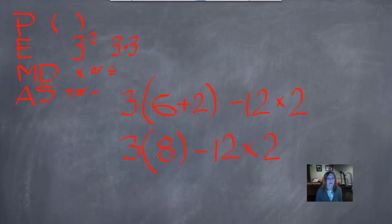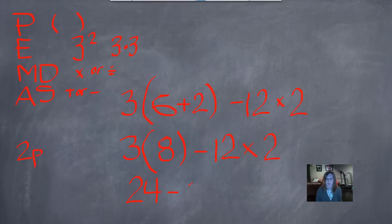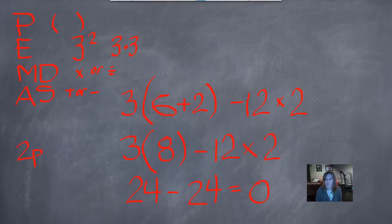The next step is exponents, but we don't have any. The next step is multiplication or division, whichever comes first. When you write a number right next to parentheses, it means to multiply — same as when you write a number next to a letter. So we multiply 3 times 8, which is 24. That's not the only multiplication in this problem, but we do it first because it comes first — just like we read left to right. The next multiplication is 12 times 2, which is 24. Now we've done all multiplication, so we do addition or subtraction. Our subtraction is 24 minus 24, which equals 0. So the answer is 0.